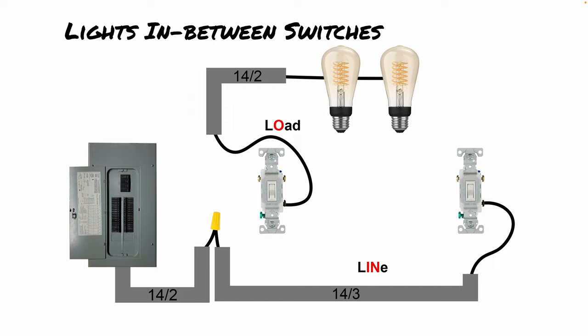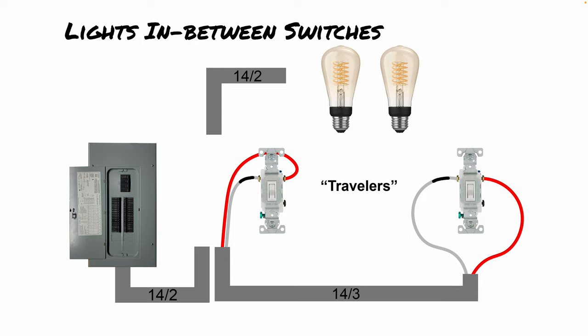First, let's talk about line versus load again. The line comes in from the electrical panel and goes all the way over to the last switch, connected to the black terminal. On the second switch — the one with the lights wired to it — the black terminal connects up to the light fixtures. That's the line versus load situation here. For the travelers, we're using a red wire plus a white wire marked with black tape, because the black wire is being used to carry power all the way to the last switch.